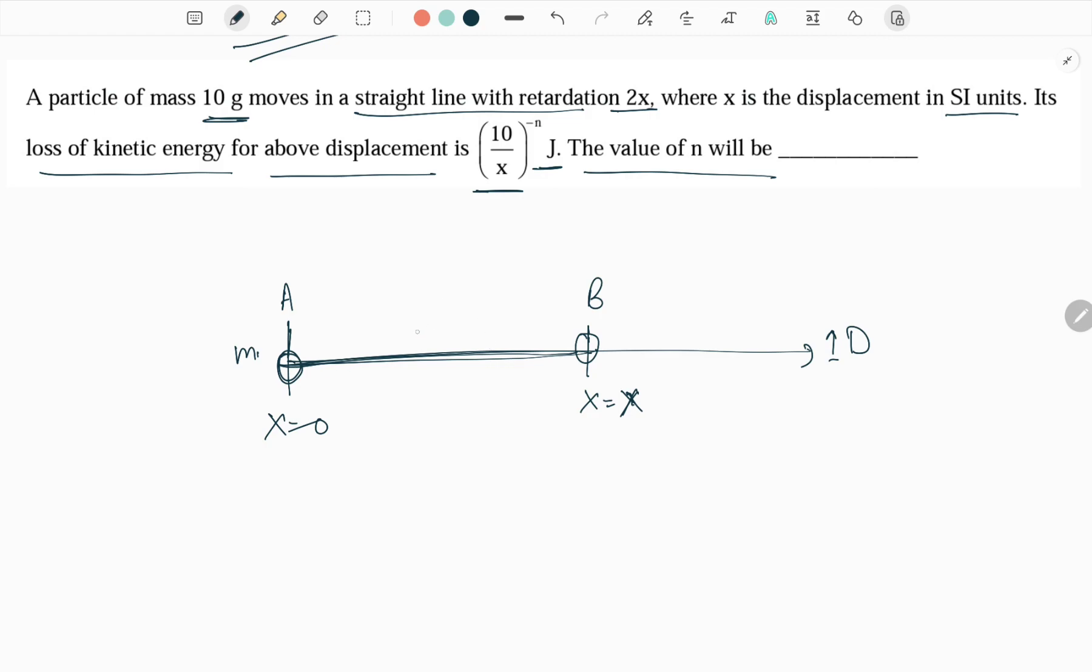The particle gets retarded with retardation of 2x. So this is retardation, so we have to make it minus 2x.